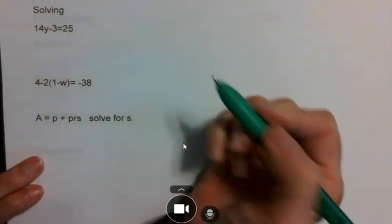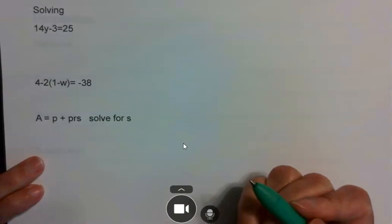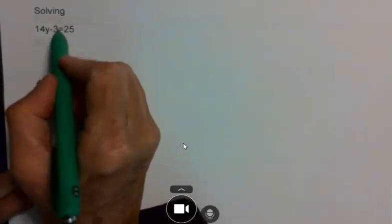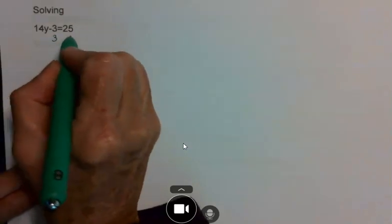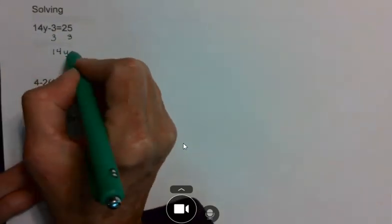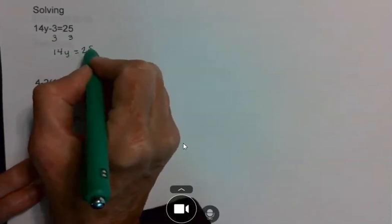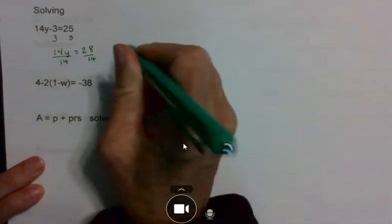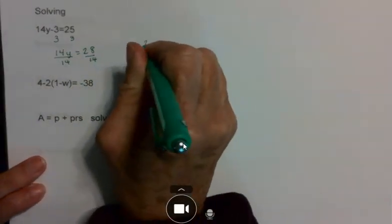Then you had a section on solving. Remember, solving involves doing the opposite of what you have in the problem. On this one, I have minus 3, so to get rid of it I add 3, giving me 14y equals 28. I divide by 14 and get a final answer of y equals 2.